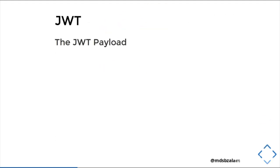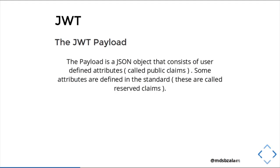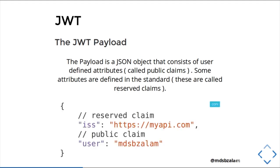Next is the JWT payload. The payload is a JSON object that consists of two different things: one is a public claim and another is a reserved claim. There are some standards reserved for reserved claims. This is an example of how a reserved claim and public claim look like. ISS is the issuer — here it is myapi.com — and the public claim is user, available publicly. Here the user is mdspz alam.